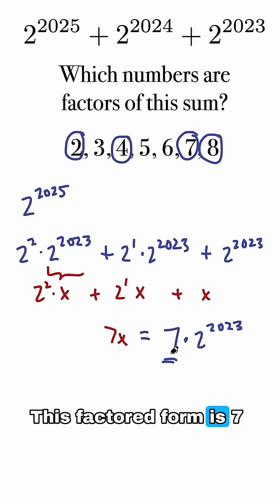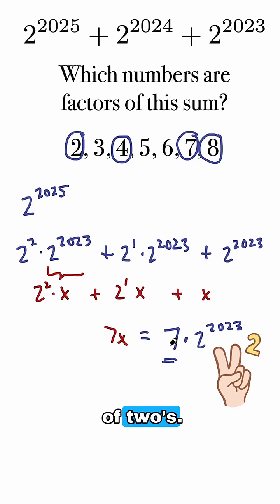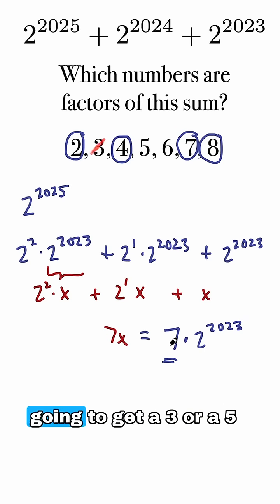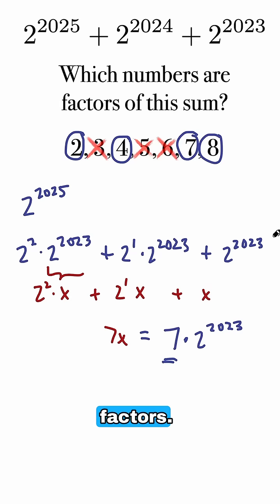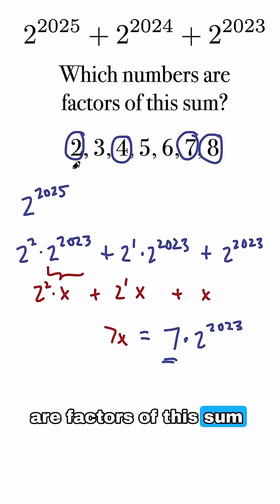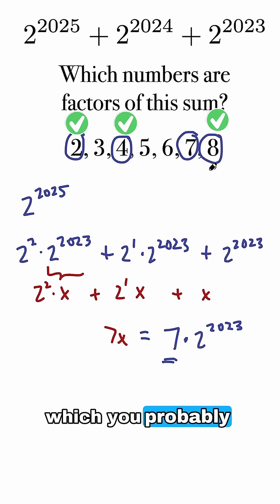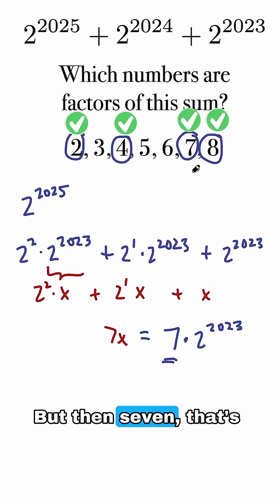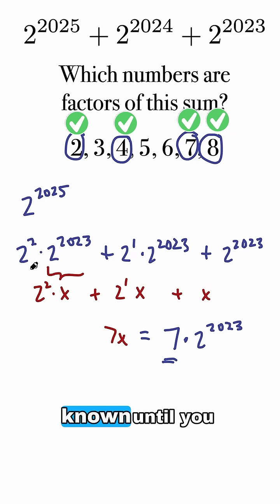You know what? This factored form is 7 and then a whole bunch of 2s. So I'm never actually going to get a 3 or a 5 or a 6 anywhere in the factors. The only numbers that are factors of this sum are 2, 4, 8, which you probably would have guessed looking at it. But then 7, that's the sneaky number that you might not have known until you realized to use this trick.